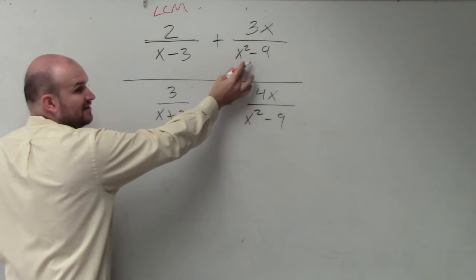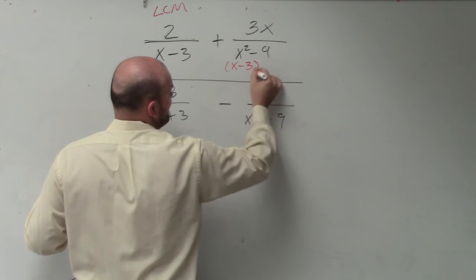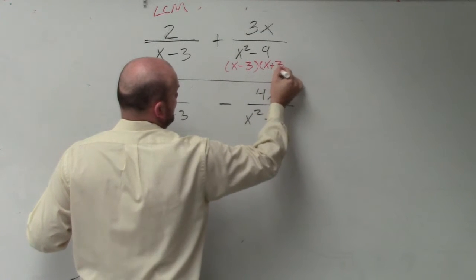Well, here I can factor this. Difference of two squares tells me this is a factored form of x minus 3, x plus 3.